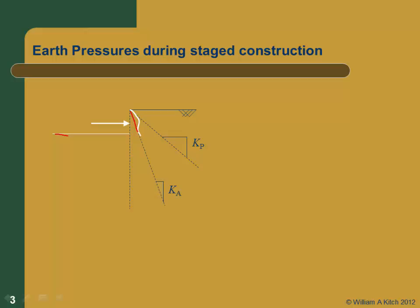Then we're going to install a strut, and we're not just going to drop the strut in there and hope that it eventually picks up the load. We're going to jack it in — they call it pre-stressing the strut, though it's not really pre-stressing because it happens after we excavate. When we put some load in that strut, we're going to increase the earth pressure, and theoretically the maximum it can go is out to the passive earth pressure. At the top, we could easily jack the first one in and get out to the passive earth pressure.